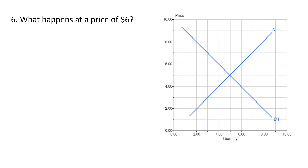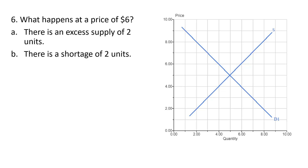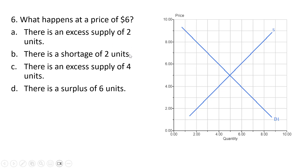Question 6 — similar question, but what happens at a price of $6? Anytime the price exceeds the equilibrium price of $5, we're going to have an excess supply or surplus, so we can eliminate answer choice B. At $6, quantity demanded reading off the demand curve is 4. Reading off the supply curve, quantity supplied is 6. So quantity supplied exceeds quantity demanded by 2 units — 6 minus 4. The correct answer is A.